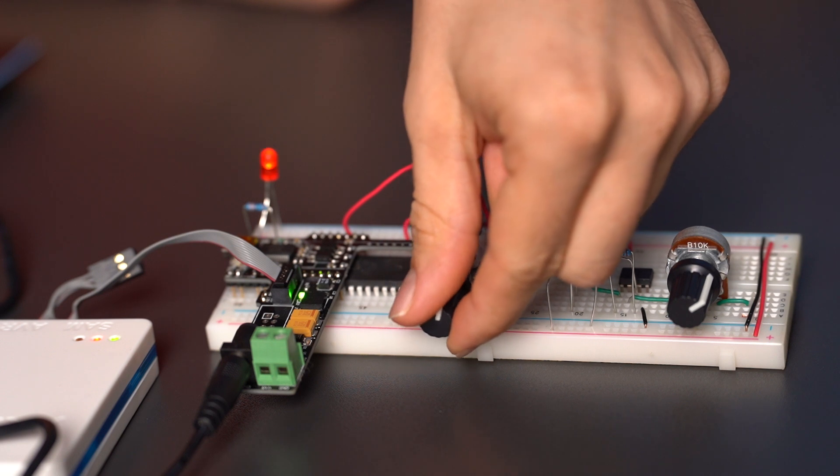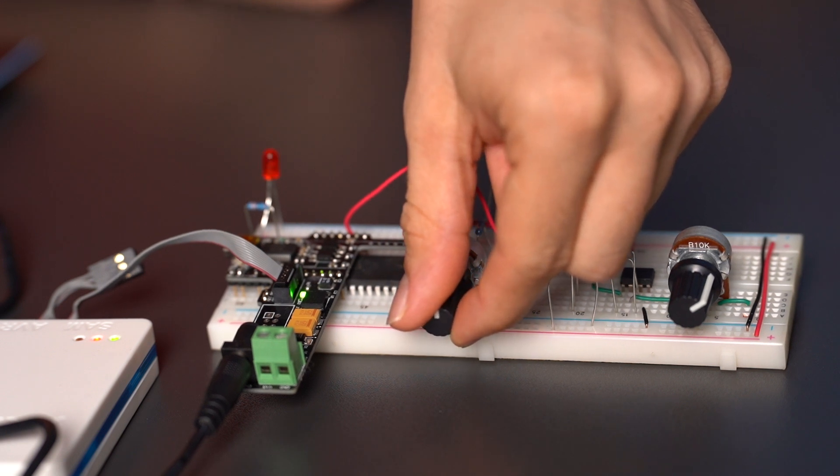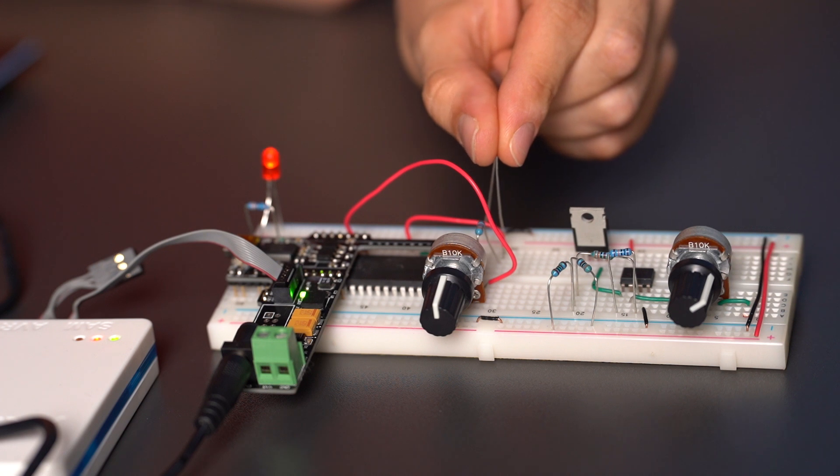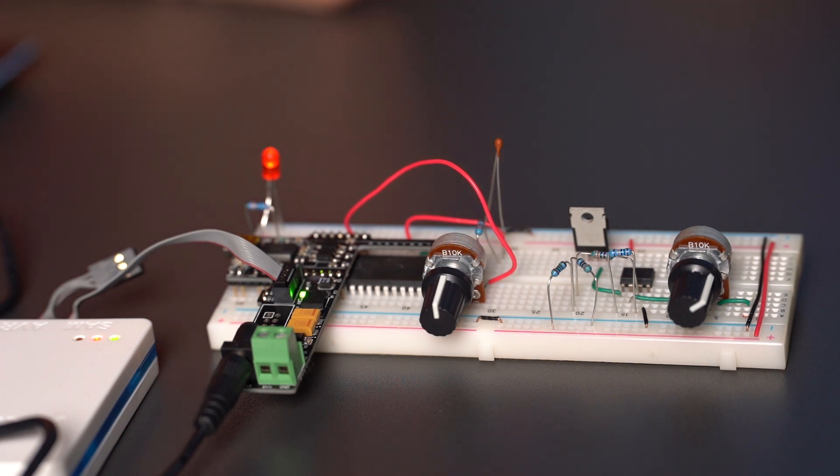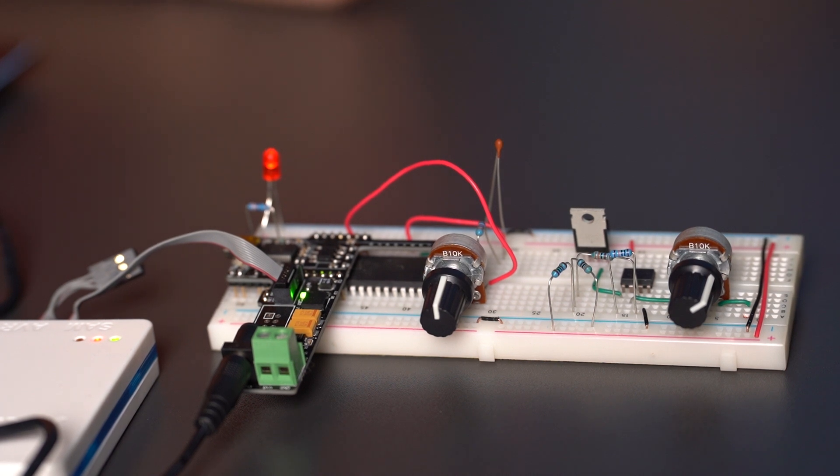Set the reference voltage with the help of the potentiometer, so that the LED just doesn't light up. Now, if we warm up the NTC with our hand, or with any other heat source, then the LED will light up, as long as the NTC doesn't cool down below the previously set value, which is the current temperature of our room.